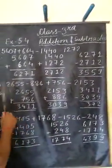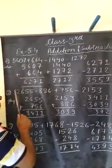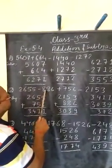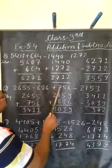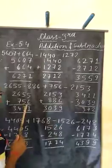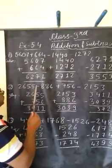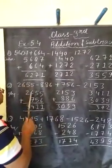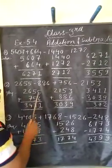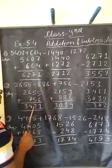In second question, there is no sign means plus 2655 minus 886 plus 756 minus 2153. We add the positive numbers 2655 and 756. We get 3411.